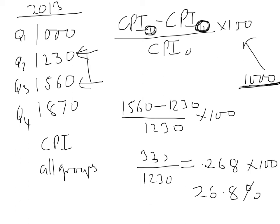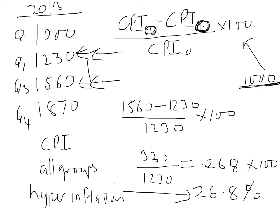That's a rate of inflation of 26.8% between quarter 2 and quarter 3 of 2013 - that would be hyperinflation! But remember, I'm just doing this for illustrative purposes so the numbers can be a little unrealistic. Now I'm going to get you to do the same calculation going from quarter 3 to quarter 4 - let's turn the page.